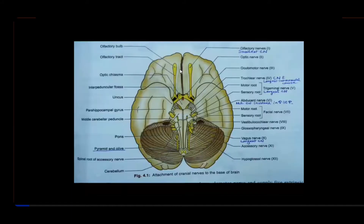In this diagram they've shown the ventral aspect of the brain, and ventrally you can see this portion here is the cerebellum. The cerebellum also has two cerebellar hemispheres, just like the cerebrum has two cerebral hemispheres. The two cerebral hemispheres are united by a broad band of commissural fibers called the corpus callosum. Here, the two cerebellar hemispheres are united by a median band called the vermis. So vermis connects the two cerebellar hemispheres.